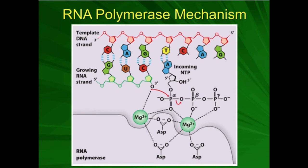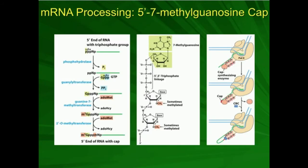For all other nucleotides there is loss of pyrophosphate, but for the very first nucleotide that was added, there was no 3' OH that attacked it. So there was no loss of pyrophosphate, meaning the 5' end of an RNA molecule is going to have a triphosphate moiety on it because nothing attacked any of those phosphates. That makes it unstable. So we use an enzyme called phosphohydrolase, which removes the gamma phosphate — the most distal one — leaving only two phosphates.